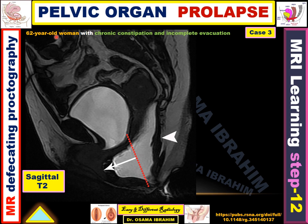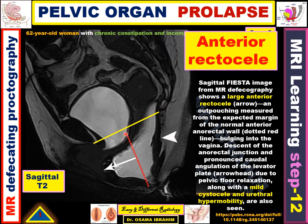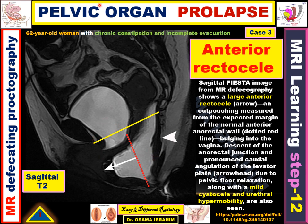Case three: a 62-year-old woman with chronic constipation and incomplete evacuation. On sagittal T2, draw the pubococcygeal line from the lower edge of the pubic symphysis to the last coccygeal joint. There is large descent of the rectum — severe rectocele — and an anterior rectocele anterior to the anorectal junction line. There is also a small cystocele. There is no descent of the middle compartment. Diagnosis: anterior and posterior compartmental prolapse of the pelvic floor.